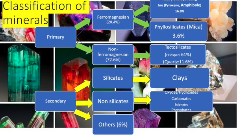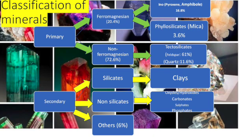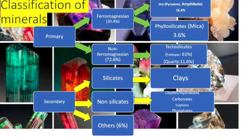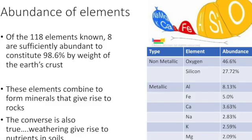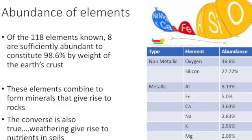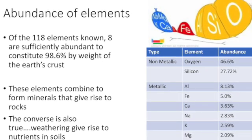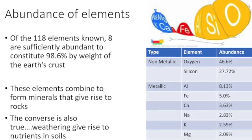Secondary minerals could be silicates and non-silicates. Silicate minerals are predominantly clays, and non-silicate minerals are oxides, hydroxides, carbonates, sulfates and phosphates. If you look at the abundance of elements in the earth's crust, out of the 118 elements known to us, 8 are sufficiently abundant to constitute 98.6% by weight of the earth's crust.